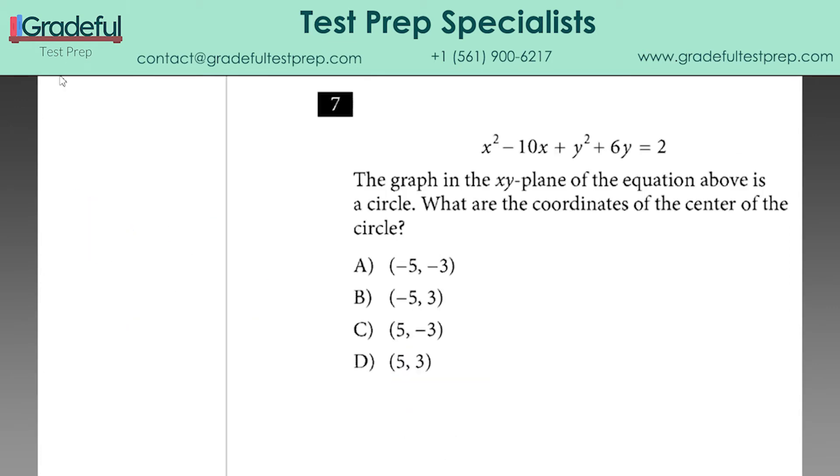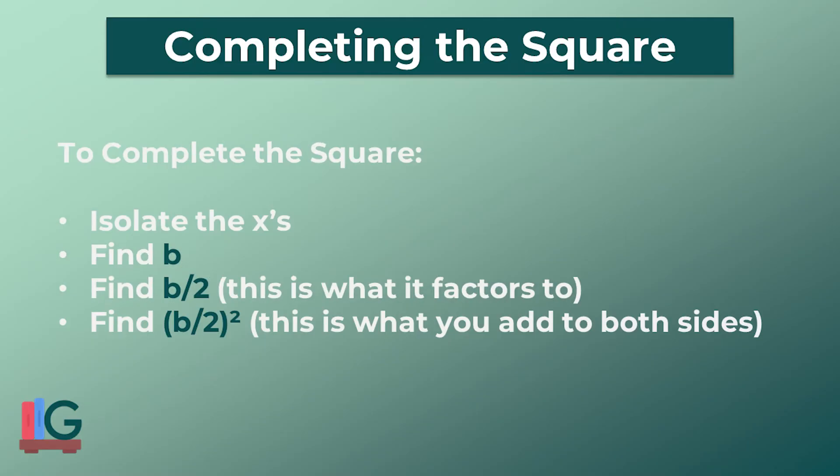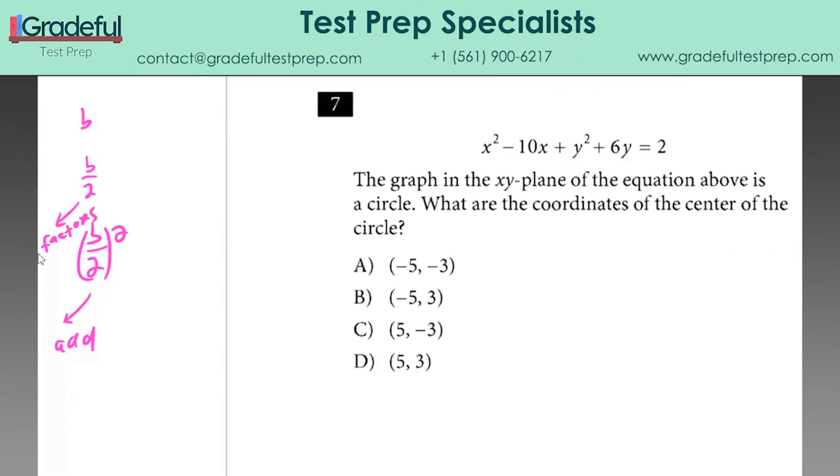Question number 7 is going to give us practice on completing the square to find the equation of a circle. It's a common operation on the SAT. To complete the square, you need to know B, B over 2, and B over 2 squared. You add B over 2 squared to both sides, and B over 2 will be what it factors to. What B are we talking about? The B of a quadratic in the format y equals ax squared plus bx plus c. We're talking about the number in front of the x.